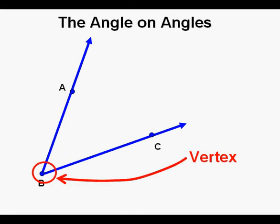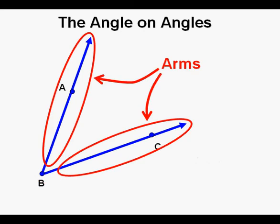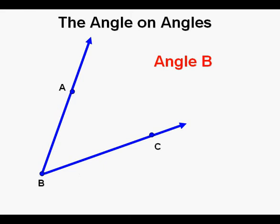The joining point of an angle is called a vertex. The two component side rays are called arms. Angles are labeled in different ways. One common way is to name the angle after the point at its vertex. This angle could be labeled Angle B after its vertex at point B.